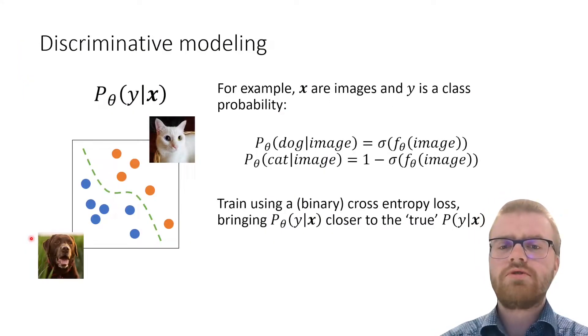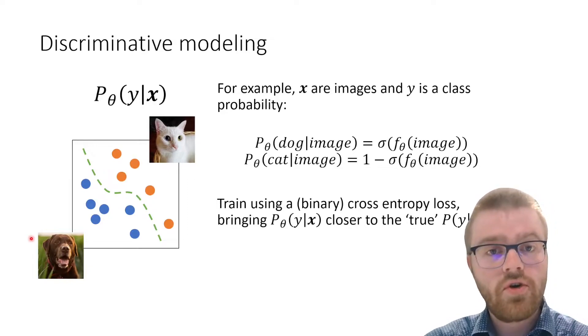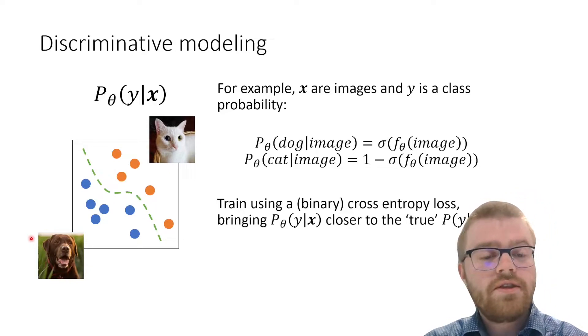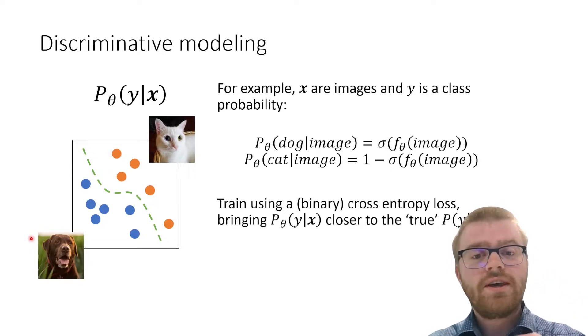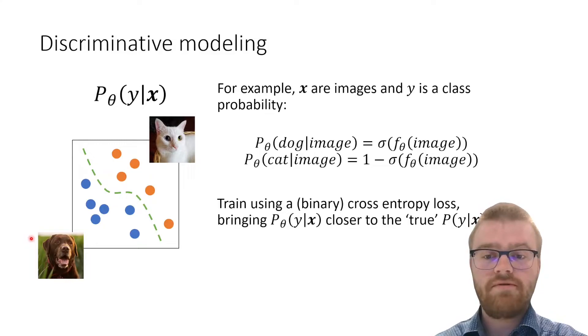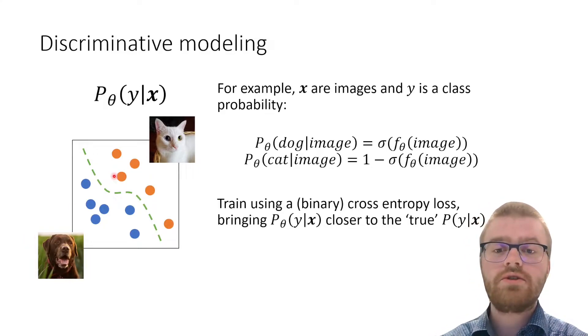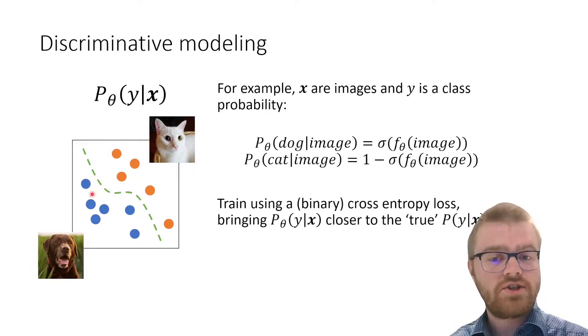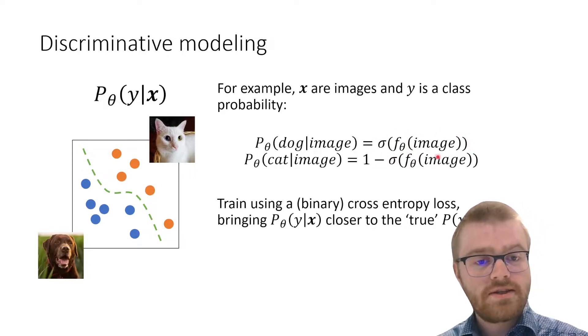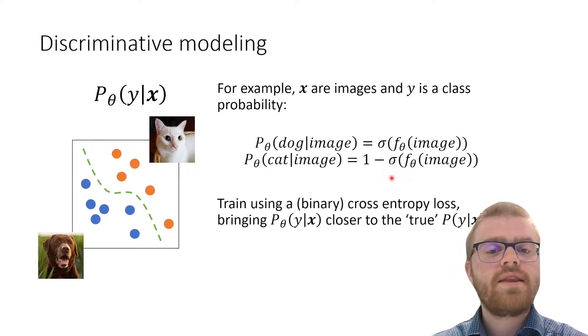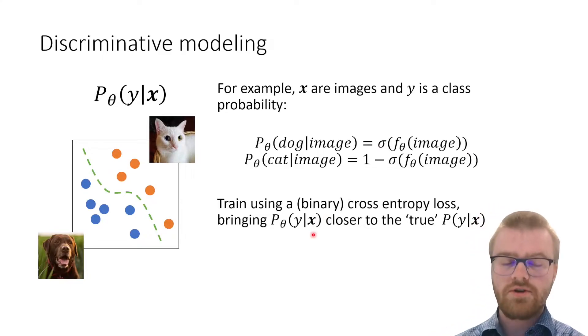Contrast this to discriminative modeling which we have treated earlier in the course. In discriminative modeling we are trying to model the conditional categorical distribution. For example, we have images of cats and dogs and we are trying to differentiate between the two. So we are creating a neural network f with parameters theta, and for example we end with a sigmoid activation function and then train using binary cross entropy loss.